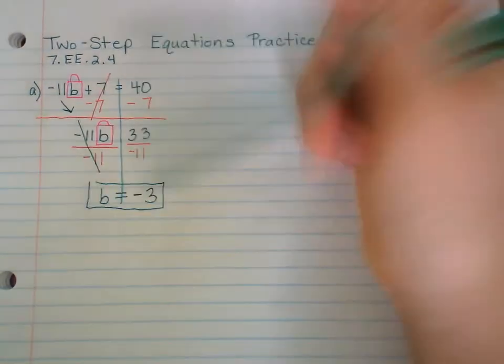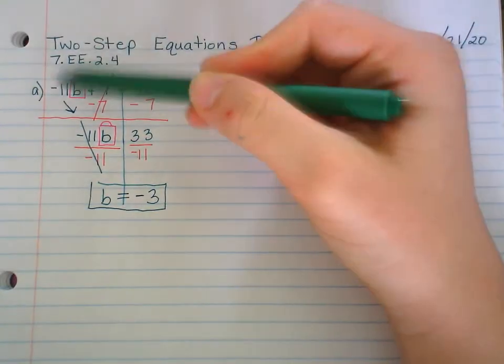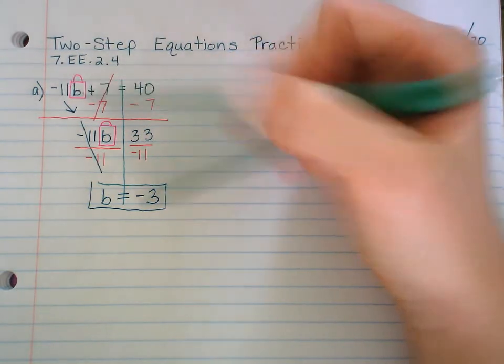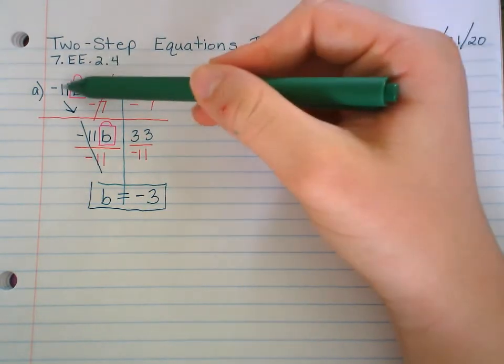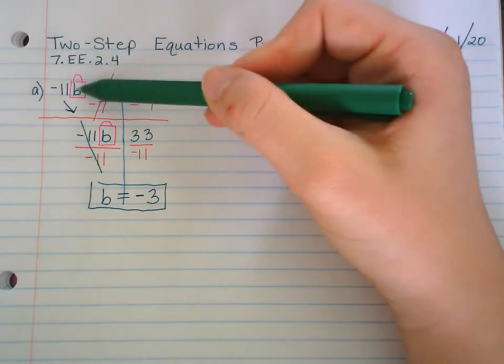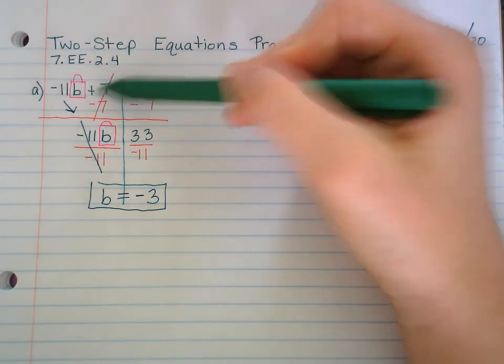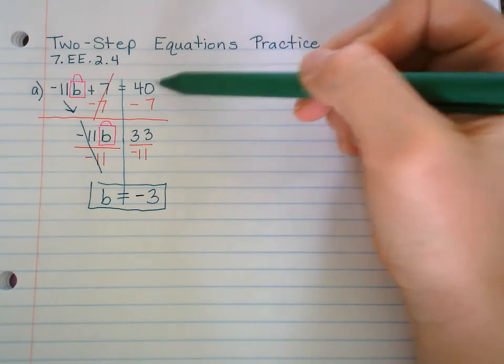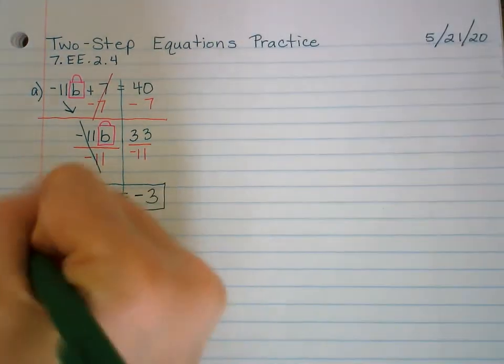But hold on, we don't have B by itself. So don't add 11, guys. They're touching. They're married. They're being multiplied. So you have to divide. You got to pay attention. When they're touching, they're married, they're multiplied. Divide by -11 on both sides. -11 divided by -11, anything divided by itself is just 1. It's 1B. We're lazy, we don't write the 1 out front. 33 divided by -11, positive divided by a negative is a negative, so -3. And remember, you can plug this in and check. -11 times -3 is 33, so 33 plus 7 equals 40? Yes.